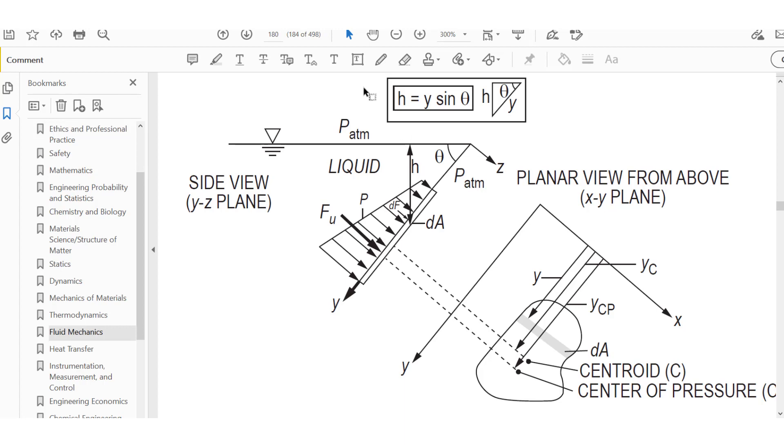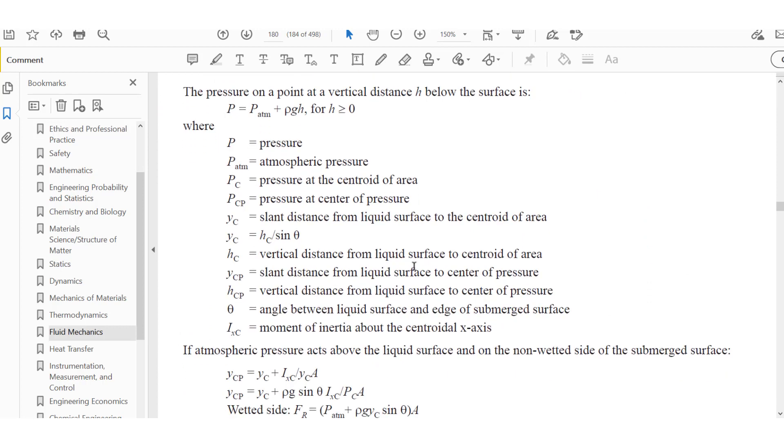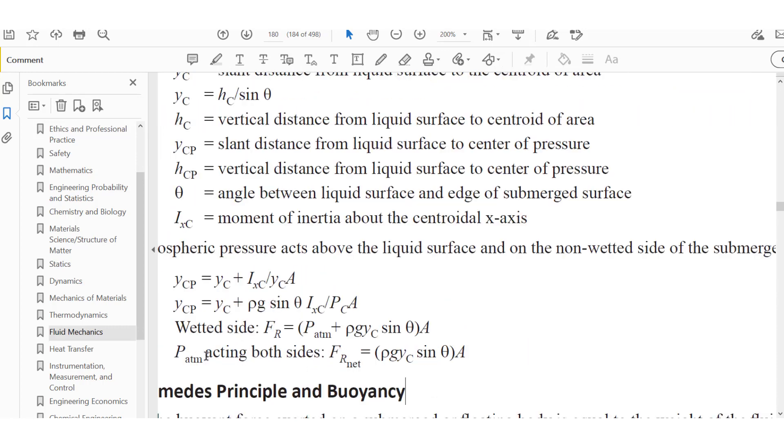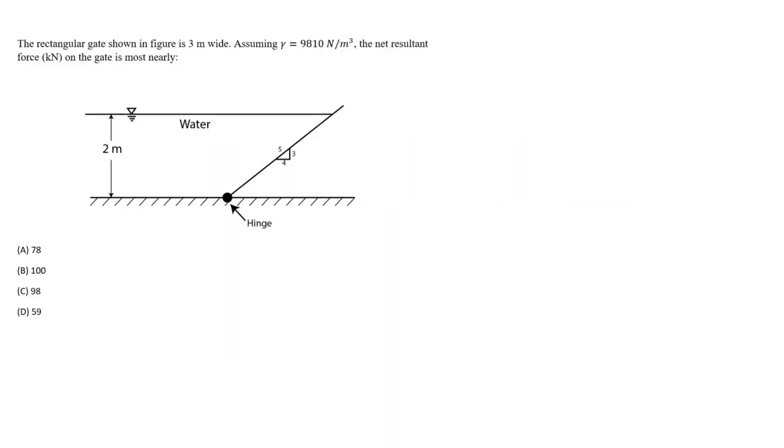Going back to the original question, we want to find the net resulting force. The equation we're going to use - we know we're going to have the atmospheric pressure on both sides, so we'll use this equation: we have our gamma, which is rho times g, times y sub c times sine theta times A. The net resultant force equals gamma times y sub c times sine of theta times the area.